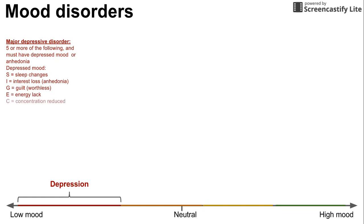Continuing the symptom list: energy lack, reduced concentration, appetite changes, psychomotor changes — that could be psychomotor agitation or psychomotor retardation, which is essentially a manifestation of somebody's mood in their physical movements — and suicidal ideation or thoughts. The mnemonic SIG-E-CAPS can help you remember these criteria. You need at least five of these symptoms, and one must be depressed mood or anhedonia.